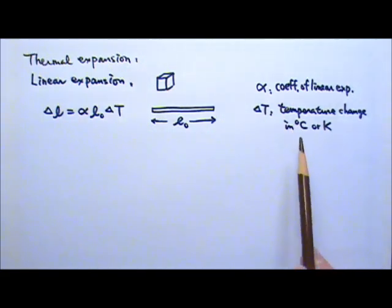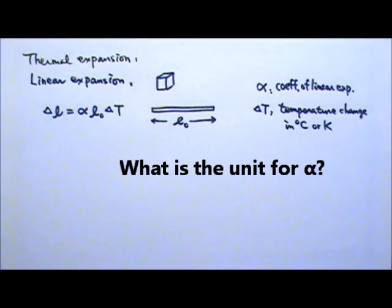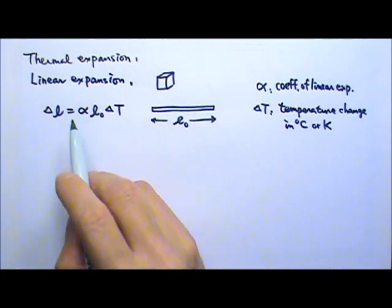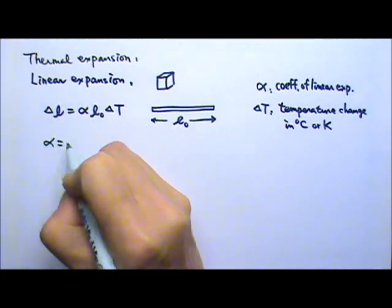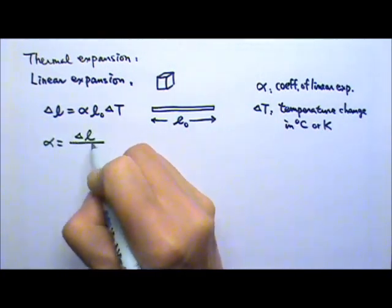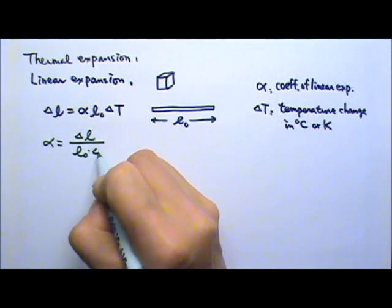What do you think the unit of alpha is? If I solve for alpha over here, I get alpha equals delta L divided by L0 times delta T.